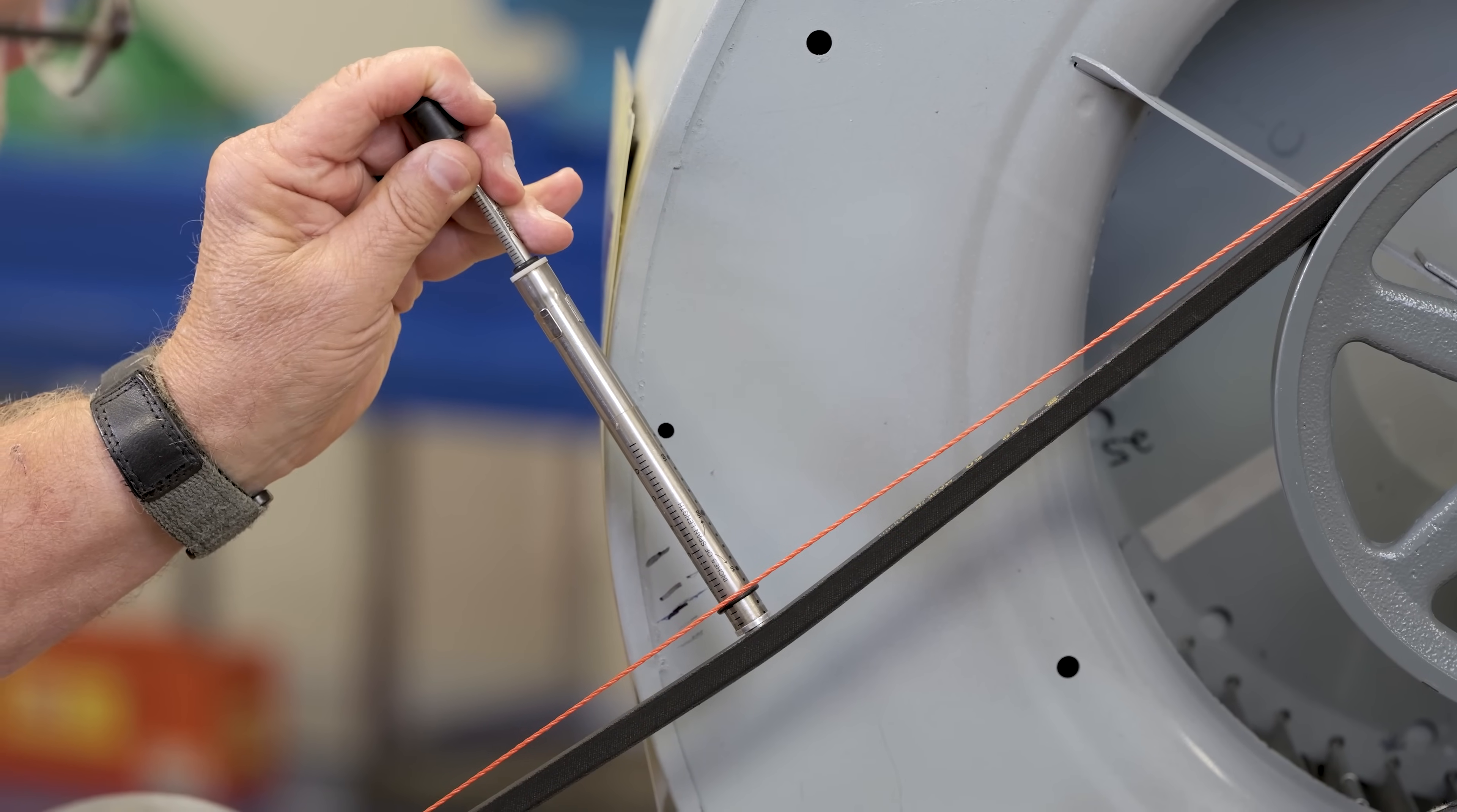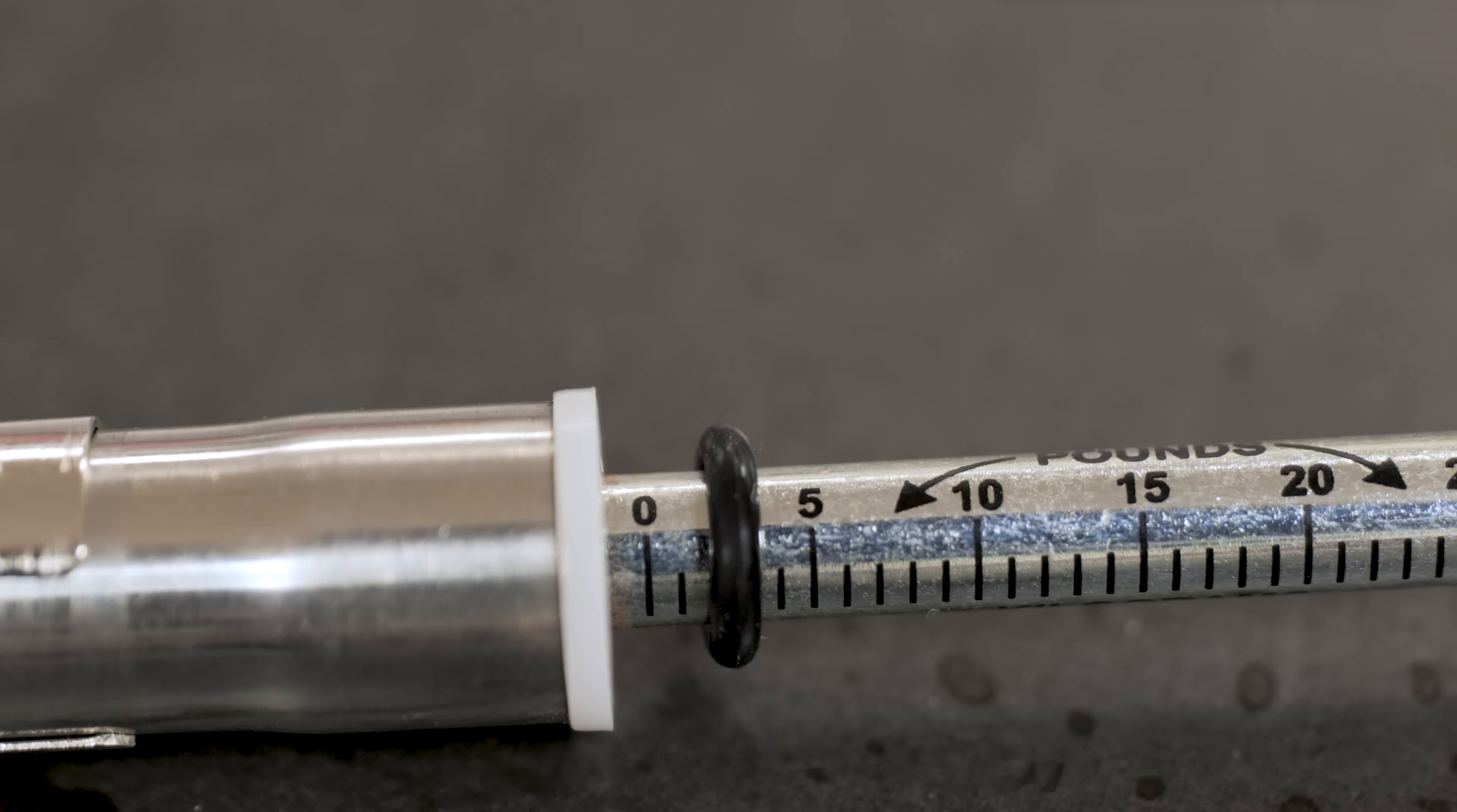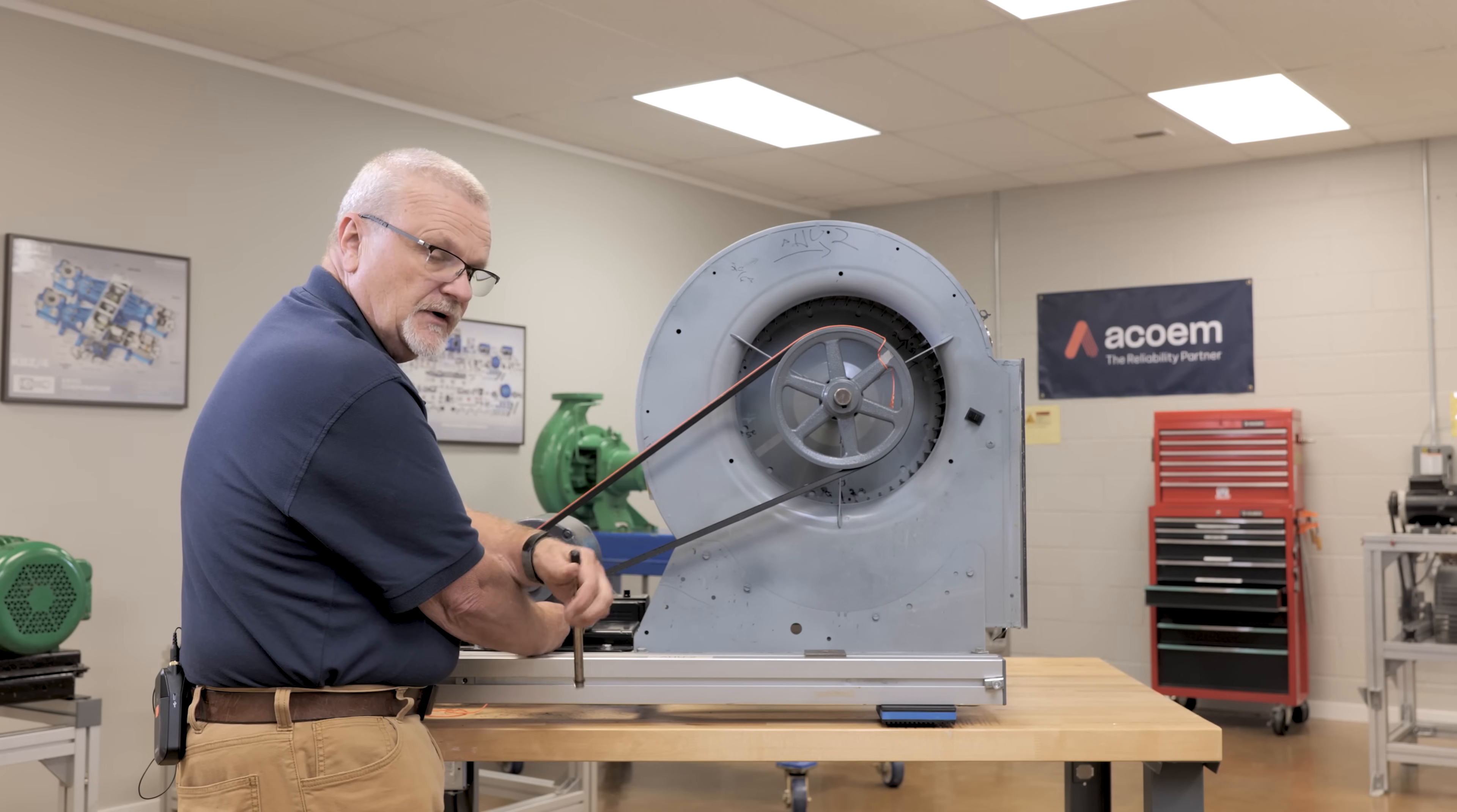I'll press down. And now after adjusting I am just over 2 pounds of deflection force. We were shooting for 2.2 so now we have a properly tensioned belt. Not just using your thumb but using a belt tension gauge.